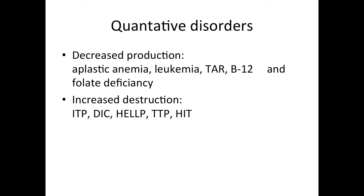In decreased production, you have aplastic anemia, which is essentially a pancytopenia, meaning that all three blood cell types are decreased: red blood cells, white blood cells, and platelets. Leukemias can also downregulate platelet amount. There is a congenital disorder called TAR, standing for thrombocytopenia absent radius — you're born without the radius and have thrombocytopenia. Vitamin B12 and folate are needed for nuclear synthesis, and their deficiency will affect blood cells.